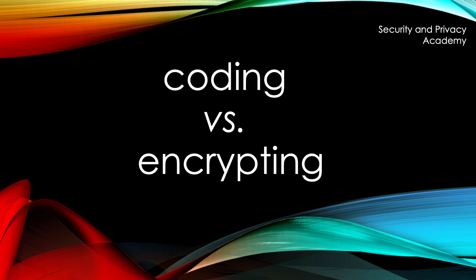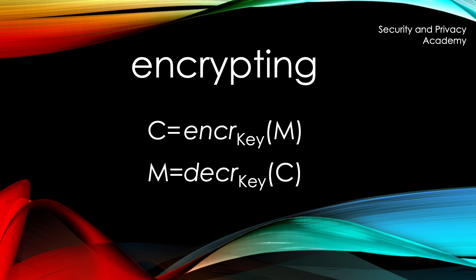Encryption means that we take a clear text input and transform it to a ciphertext using a key. The only way to decrypt the ciphertext to its original clear text is by using the decryption key, which could be the same key as has been used during encryption, but not necessarily so.